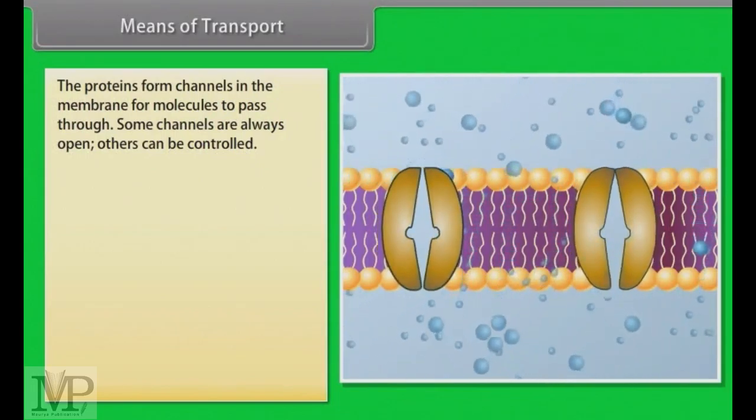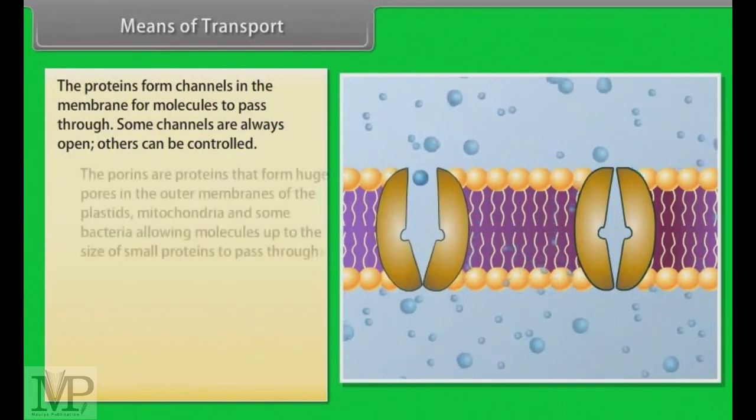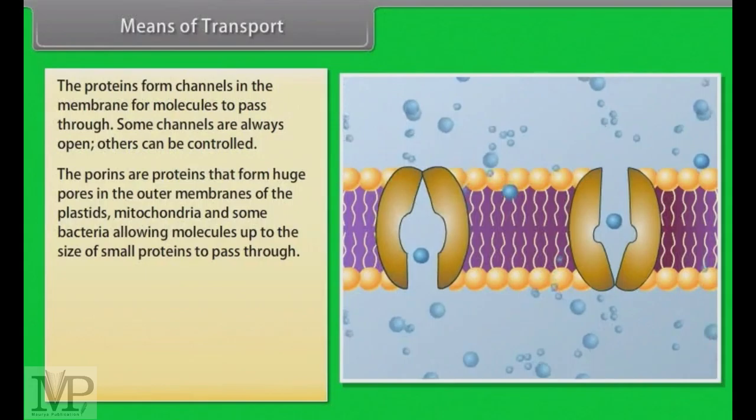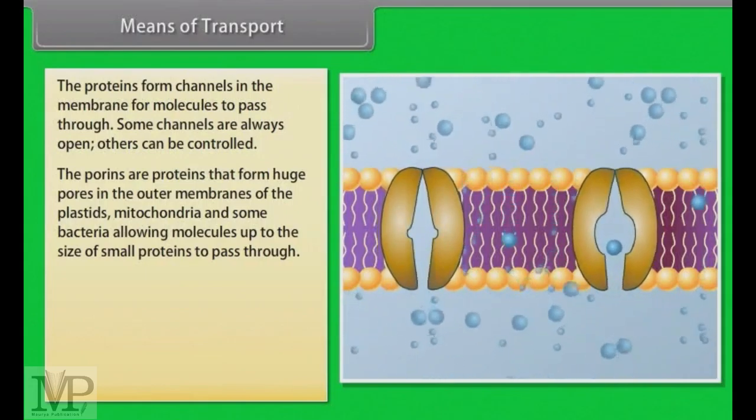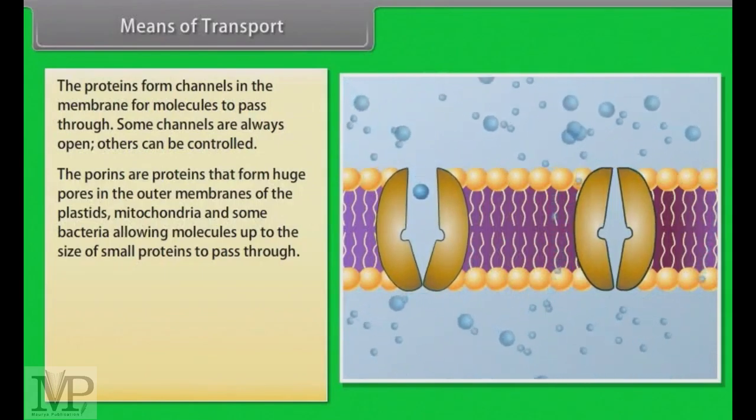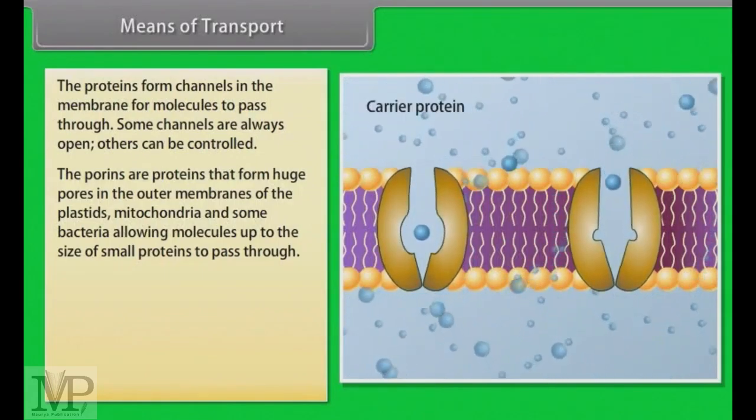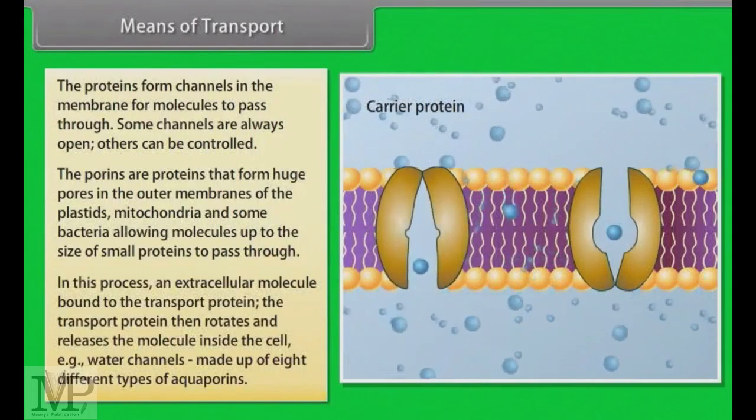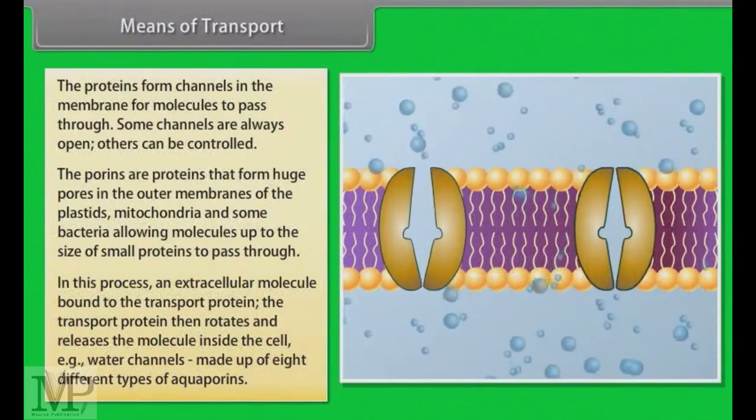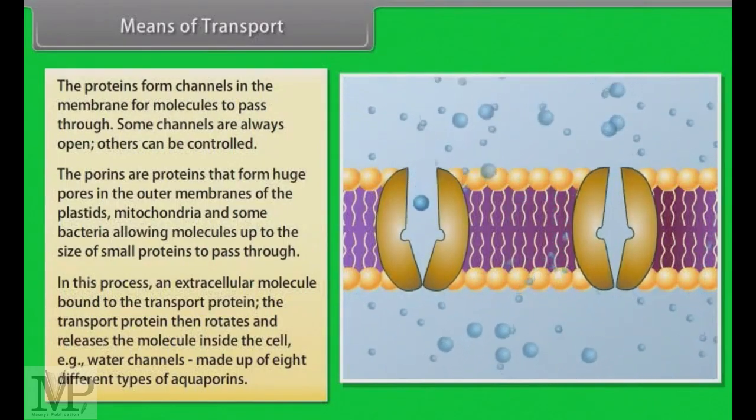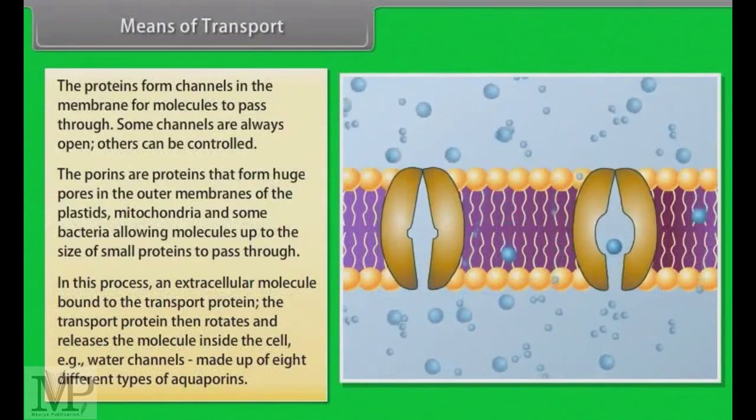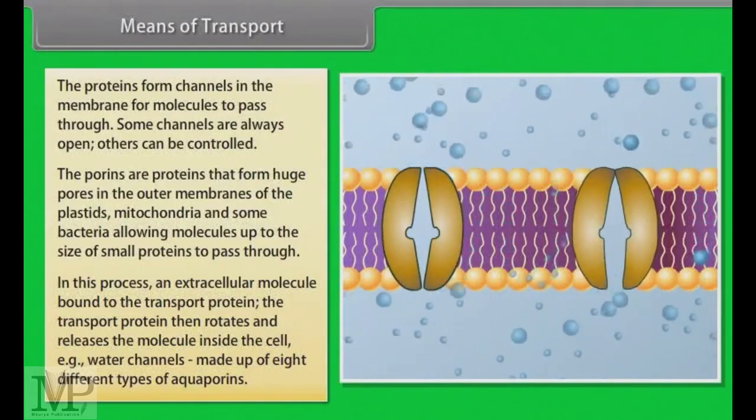Some are large, allowing a variety of molecules to cross. The porins are proteins that form huge pores in the outer membranes of the plastids, mitochondria and some bacteria allowing molecules up to the size of small proteins to pass through. In this process, an extracellular molecule binds to the transport protein. The transport protein then rotates and releases the molecule inside the cell. For example, water channels, made up of eight different types of aquaporins.